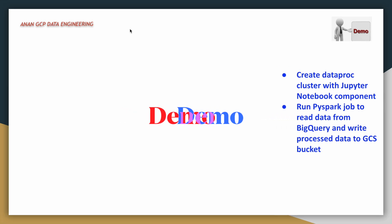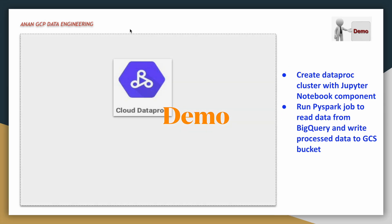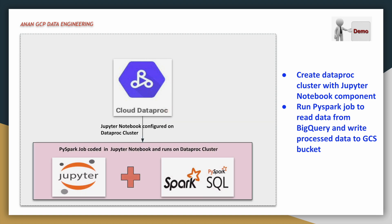In this demo, we will create a cluster and while creating the cluster we will install Jupyter Notebook. Along with Jupyter Notebook, we are also installing the BigQuery connector for PySpark. Once this cluster is created, Jupyter Notebook is available through the web interface — there will be a web link provided in the Cloud Dataproc section, and once you click on that, Jupyter Notebook will be enabled.